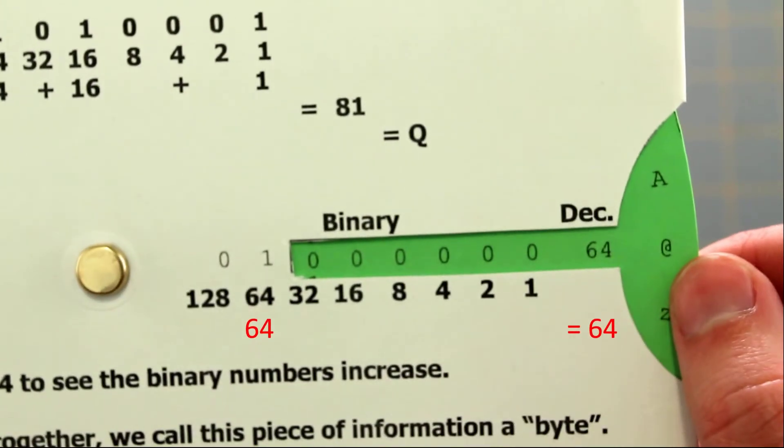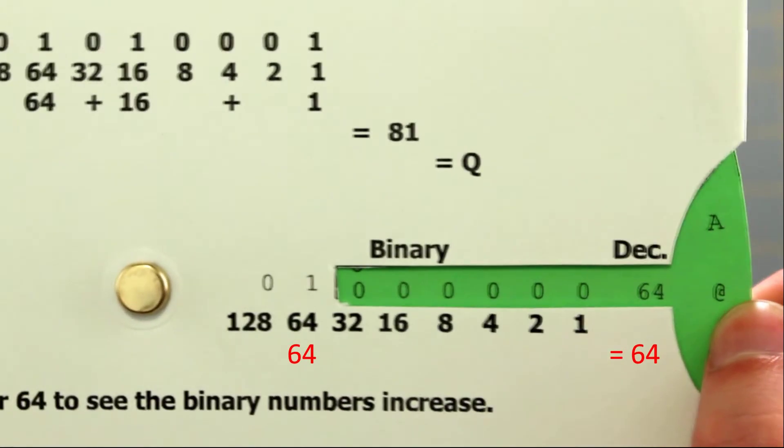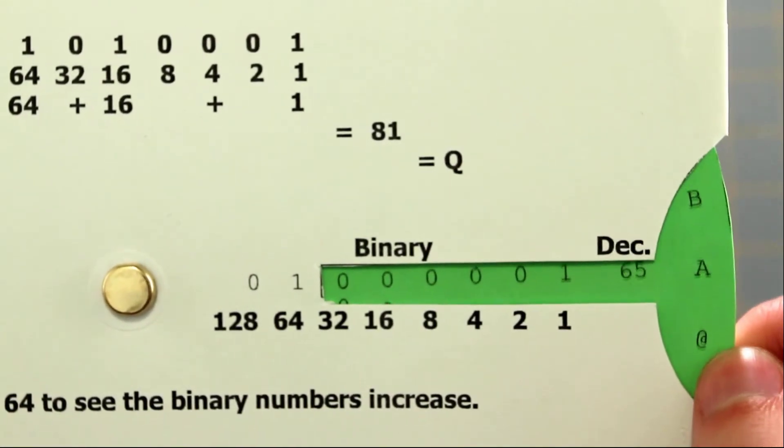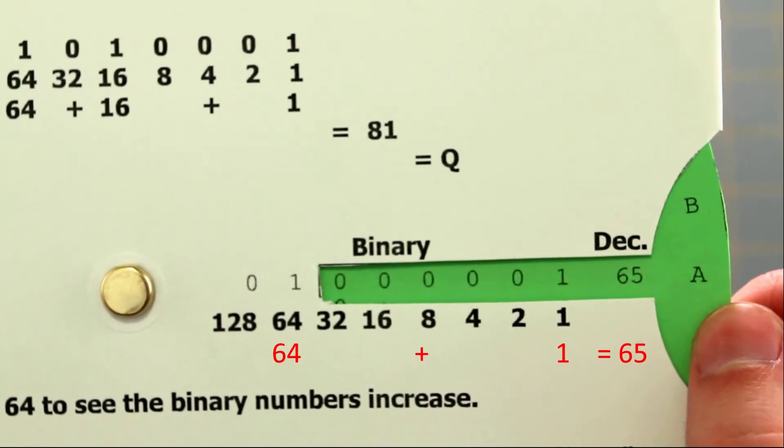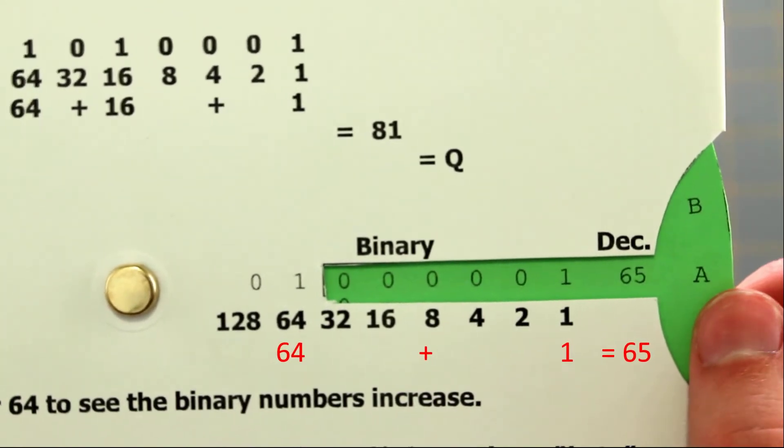When we advance the wheel to the decimal 65, which also represents the letter A, we can see that the 64's and the 1's positions are turned on, which add up to the decimal number 65.